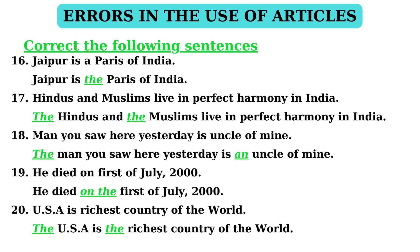In sentence 19: 'He died on 1st of July 2000.' — It is an incorrect statement. We need to add definite article 'the' before the ordinal number. The correct statement is: 'He died on the 1st of July 2000.'